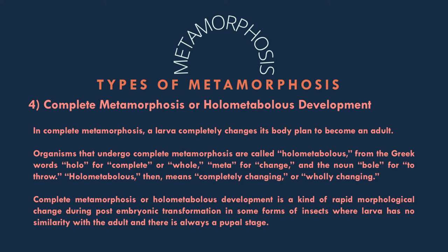Fourth is the complete metamorphosis. This is when a larva completely changes its body plan to become an adult. Organisms that undergo complete metamorphosis are called holometabolous — from the Greek words holo for complete or whole, meta for change, and the noun ballein meaning to throw. Complete metamorphosis development is a kind of rapid morphological change during post-embryonic transformation in some insects, where the larva has no similarity with the adult and there is always a pupal stage.